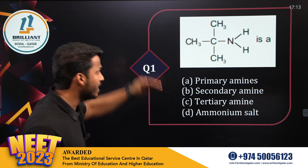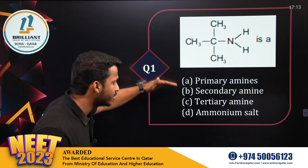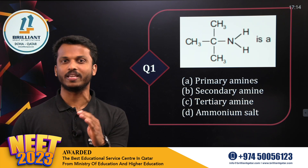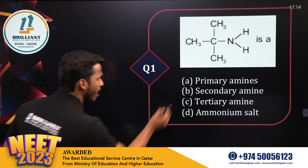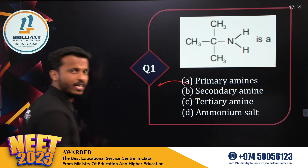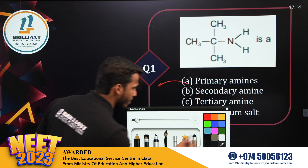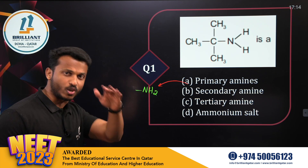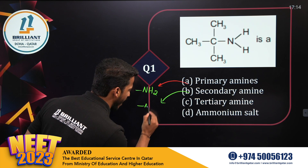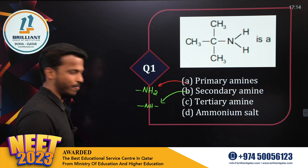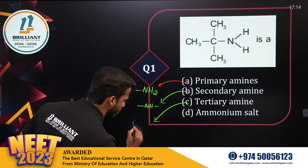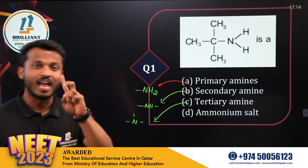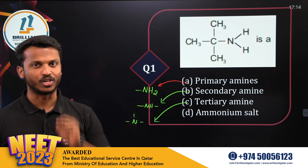Dear all, there is an amine. This amine is primary, secondary, tertiary, or ammonium salt. It's easy to understand whether a given amine is primary, secondary, or tertiary. Primary amine mostly contains an NH₂ group connected to one carbon. Secondary amine contains NH connected to two carbons, and tertiary amine contains just nitrogen — no hydrogen. So NH₂ is primary, NH is secondary, N is tertiary.